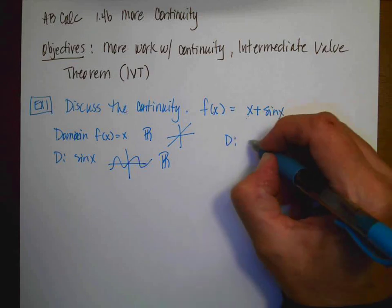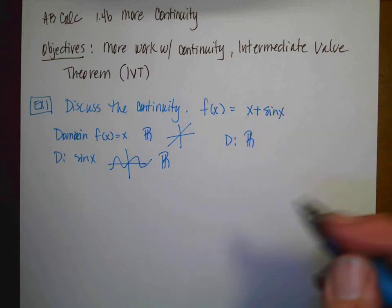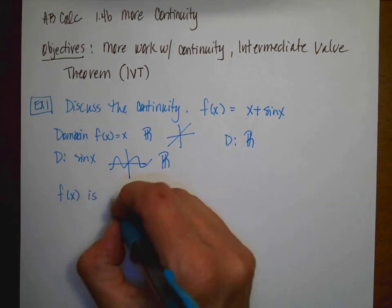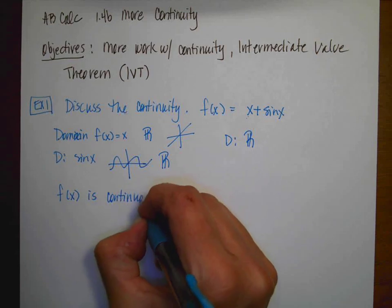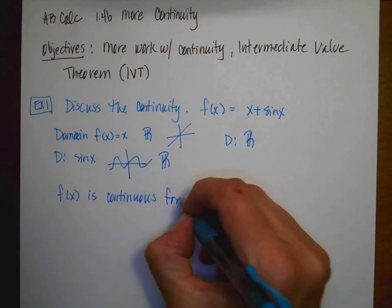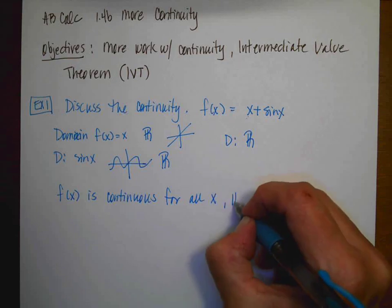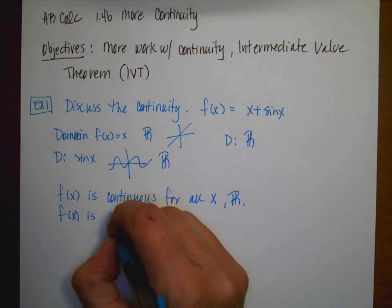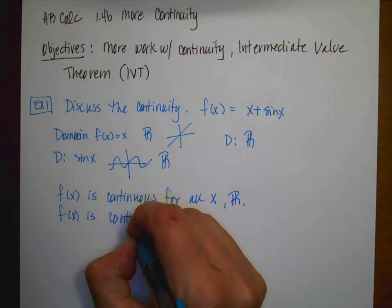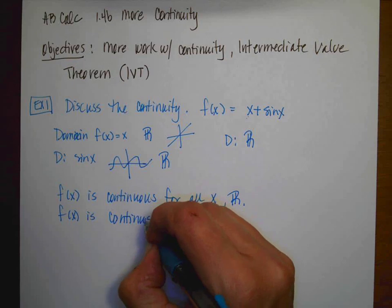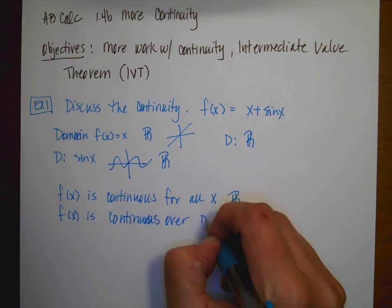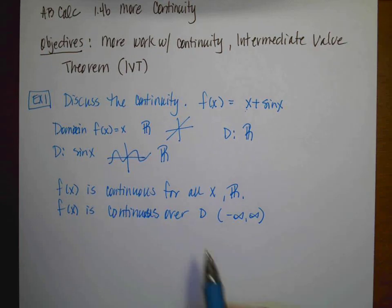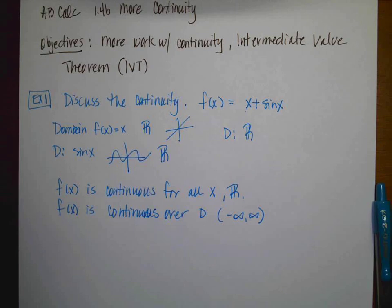So if I need to discuss the continuity, then I would say f(x) is continuous for all x, all real numbers. I could also say f(x) is continuous over its domain, but then remember you also have to state the domain, you can't make assumptions.